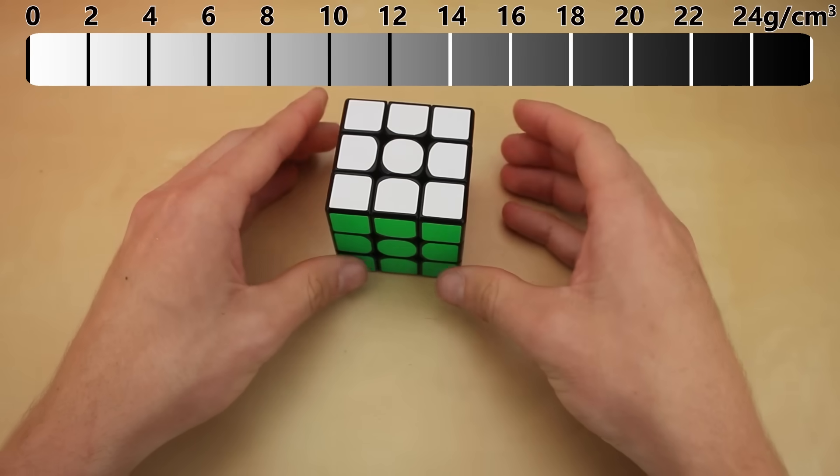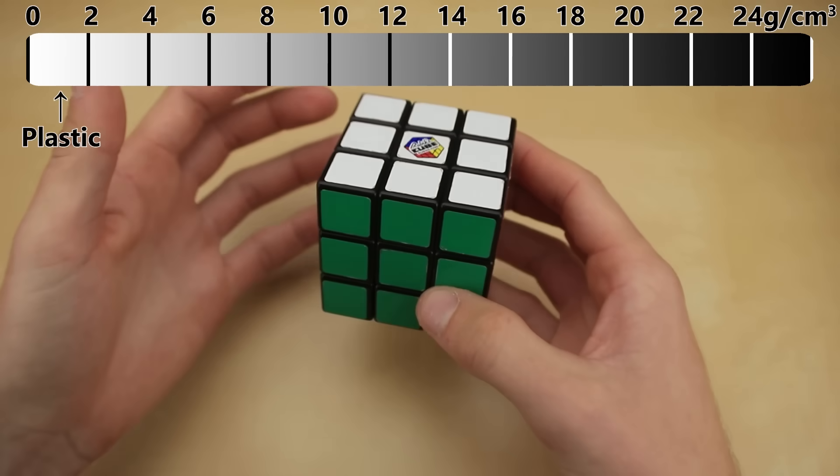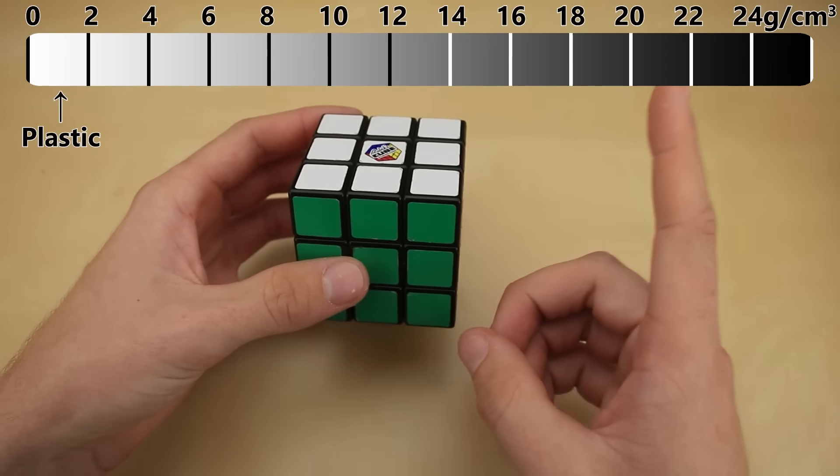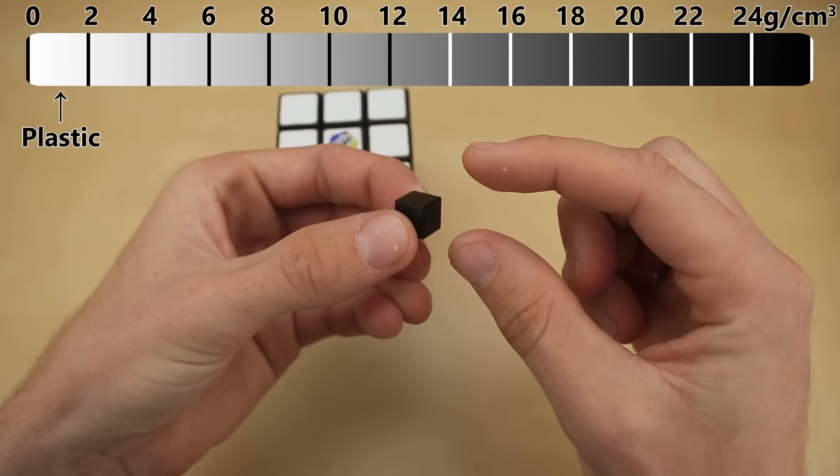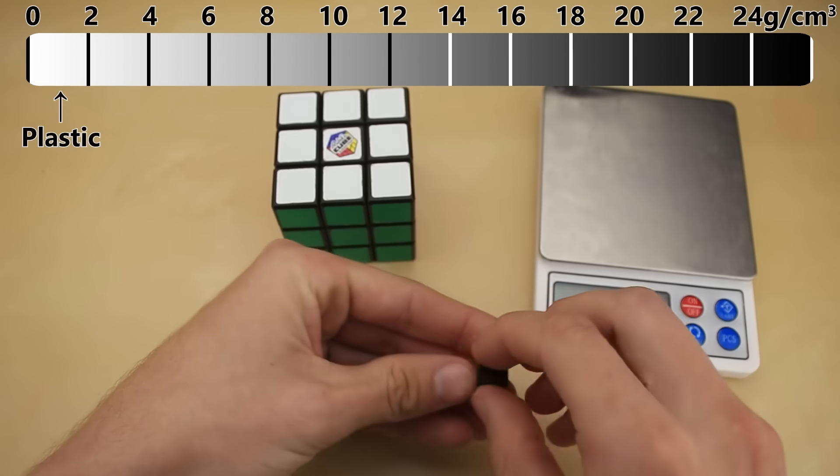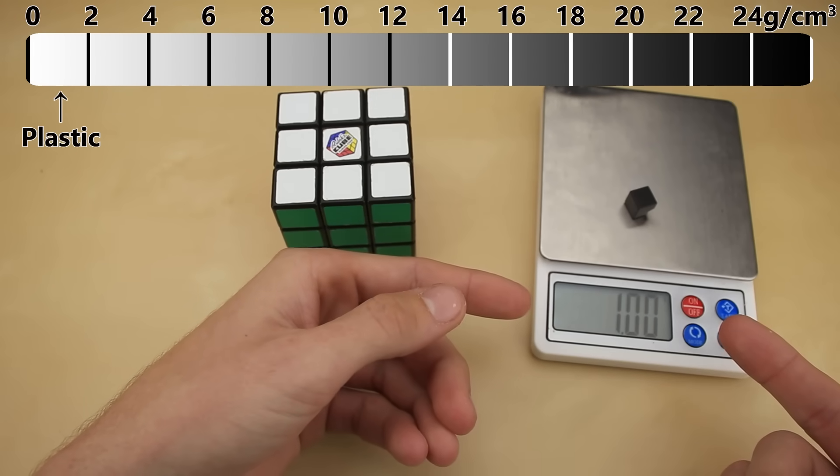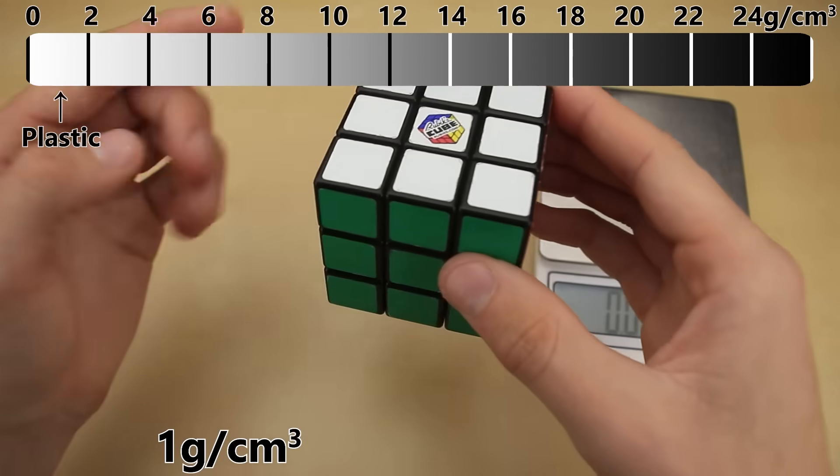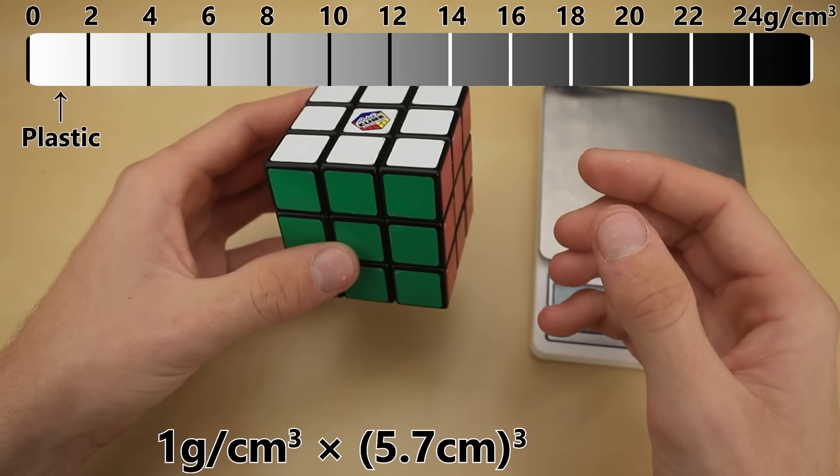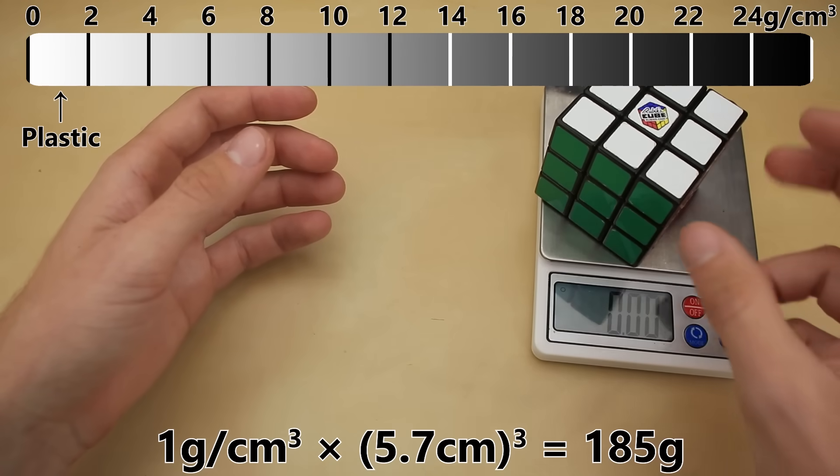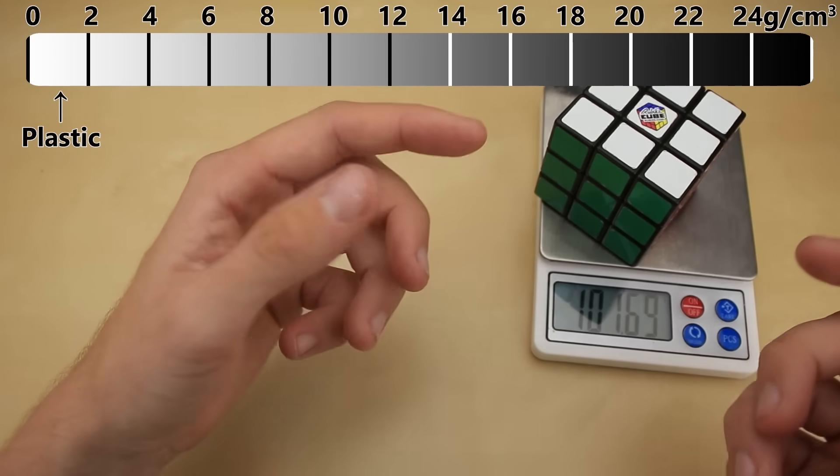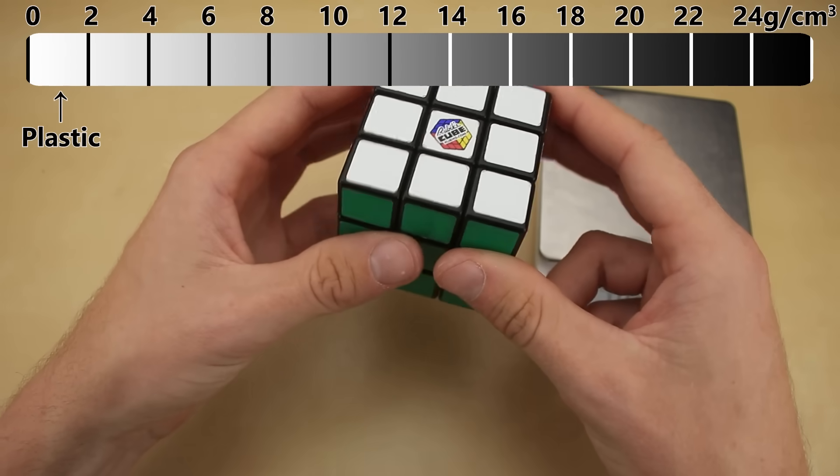Now a standard Rubik's Cube is made out of plastic, which has a density of about 1 gram per cubic centimeter. What that means is if you were to get a solid 1 centimeter cube of plastic, it would weigh about 1 gram, as you can see. Now if you multiply that density by the volume of a Rubik's Cube, that tells you that a solid plastic Rubik's Cube would weigh around 185 grams. Of course, a real Rubik's Cube is going to weigh a little bit less than that because it's not made out of solid plastic, there's a lot of empty space on the inside.